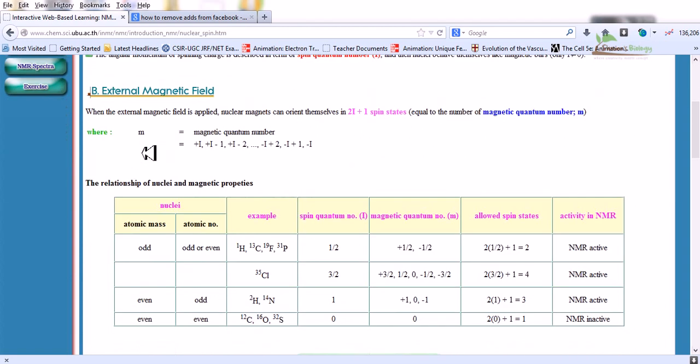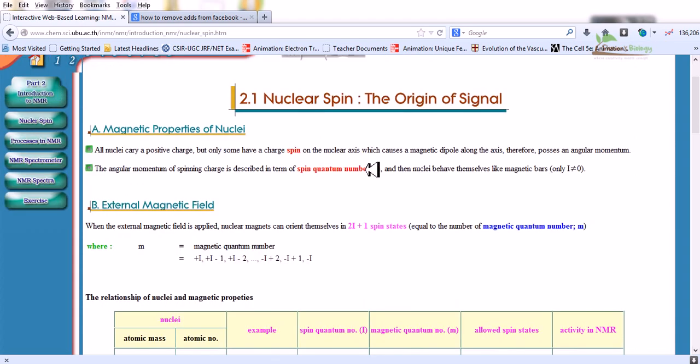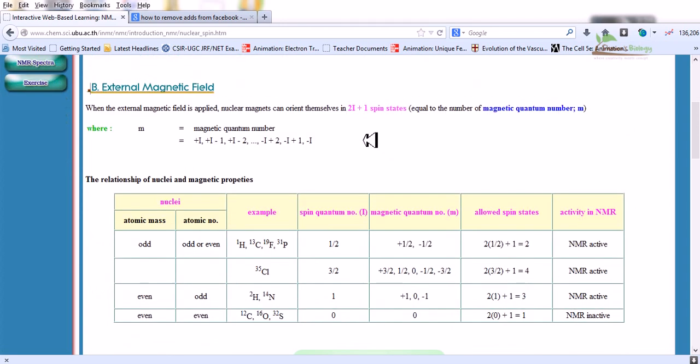When the external magnetic field is applied, nuclear magnets can orient themselves in 2I plus 1 states, where I is the spin quantum number state and M is a magnetic quantum number.